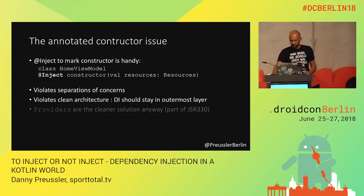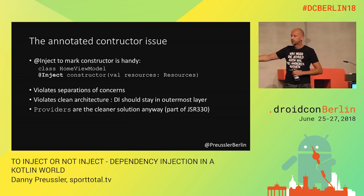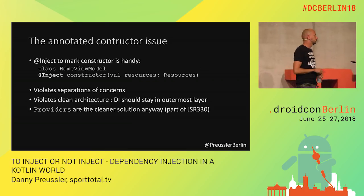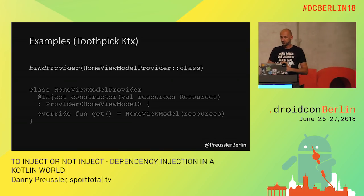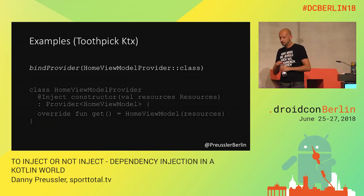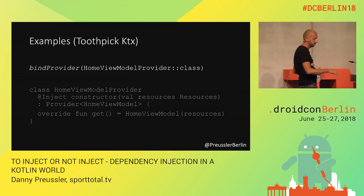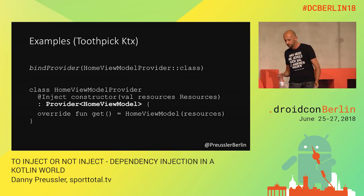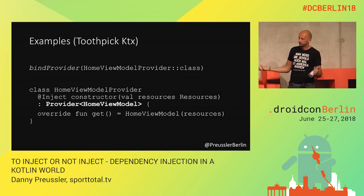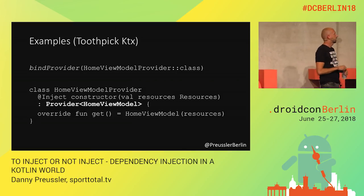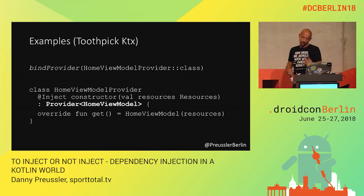I think the so-called providers are a nicer way — an interface you can implement that creates an instance, also part of the standard. This is how Toothpick does it: if you need a HomeViewModel, you define a HomeViewModelProvider, implementing a class that creates a view model. At least you can use @Inject there — then it stays in your injection layer. I like that. You can keep it out of the actual classes and still use the framework. But you have to declare one for each class.